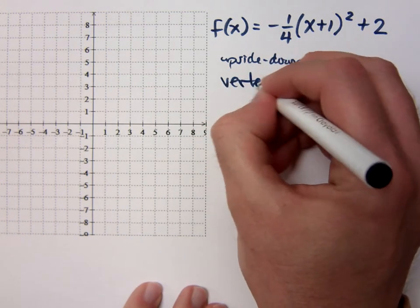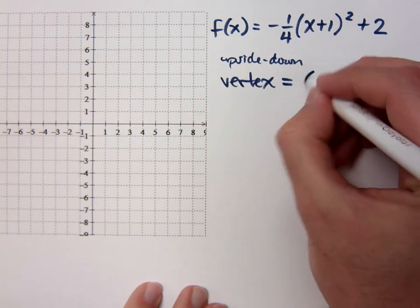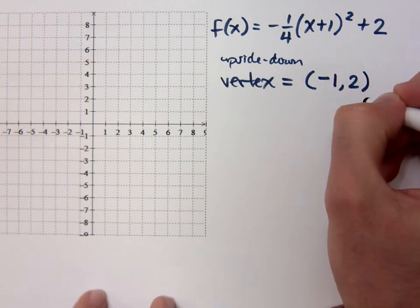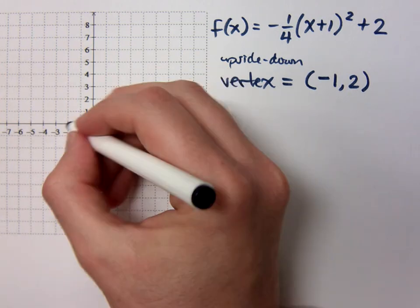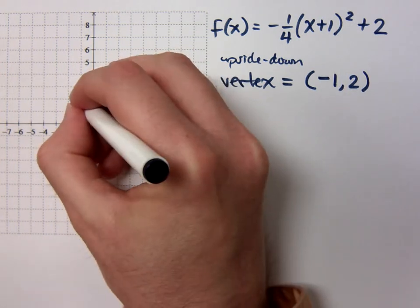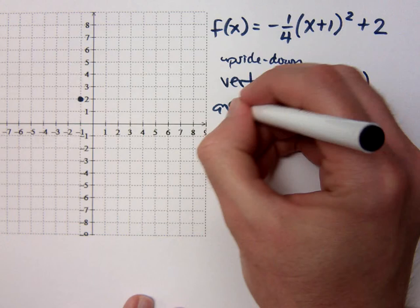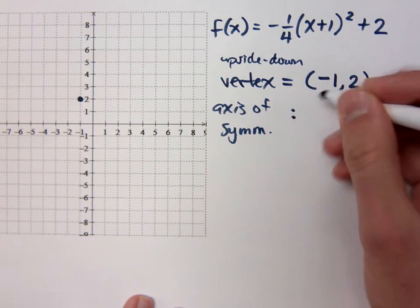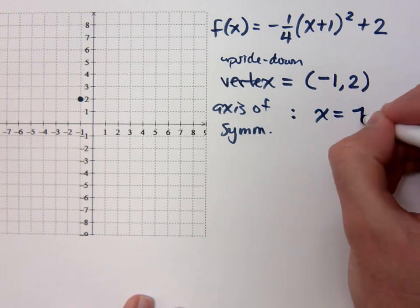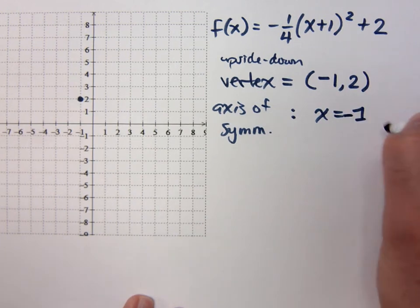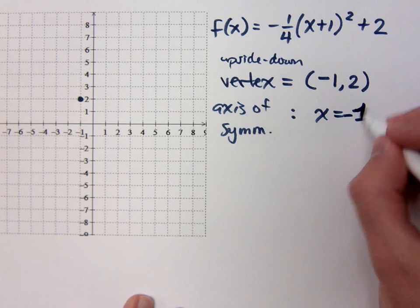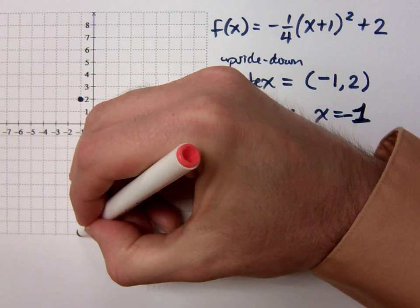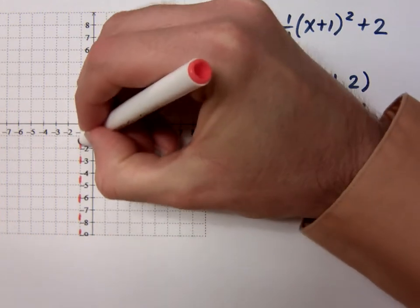Where's your vertex? Negative 1, 2. Negative 1, 2. Let me go ahead and plot that, just so we can get a sense about where things are. Negative 1, positive 2 is right here. What is your axis of symmetry? It's x equals negative 1. That just does not look right.